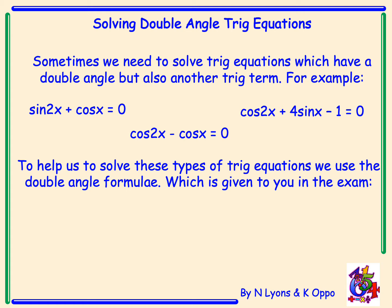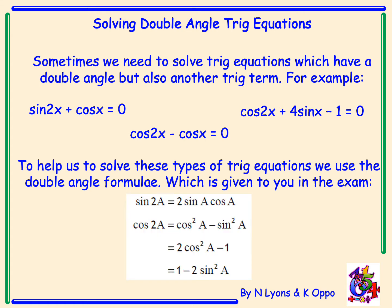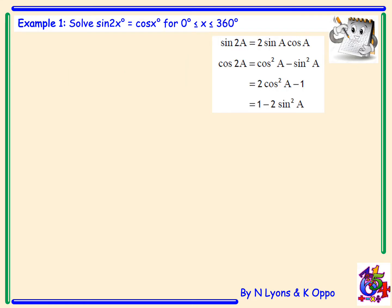To help us solve these types of trig equations we use the double angle formulae, which is given to you in the exam. Sin2a has one expansion: 2sinA·cosA. However, cos2a has three expansions — we will focus on the bottom two.